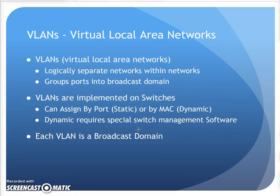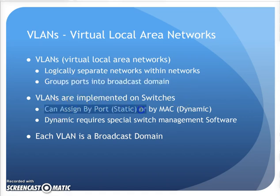So a VLAN logically separates the network at layer 2 on switches, and those ports grouped together are going to be their own little broadcast domain — their own miniature network within the whole. VLANs are implemented on the switch. I can either do it by port on the switch, or I can do it by MAC address as well. I can actually have a MAC address assigned to a certain VLAN, which allows things that might move around my network to still get assigned to the same VLAN when plugged into a new spot.